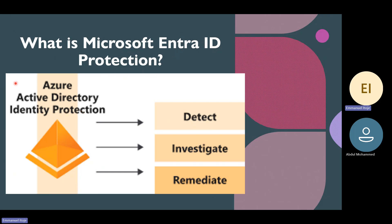The identity protection solution is built into Microsoft Entra ID and designed to protect your organization through a three-part process: detection, investigation, and remediation. Your company specializes in retail operations, not identity protection, so it can use Identity Protection to automate detection, investigation, and remediation of identity-related risks without hiring expensive security experts.